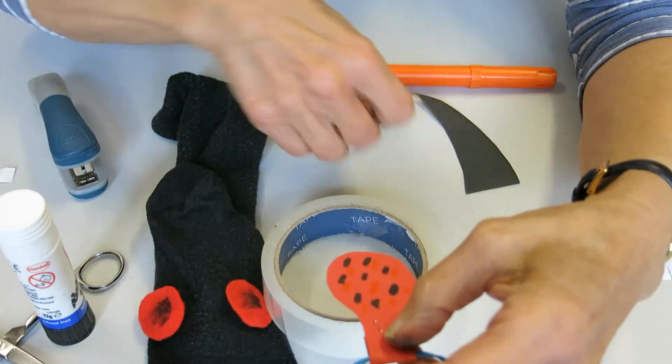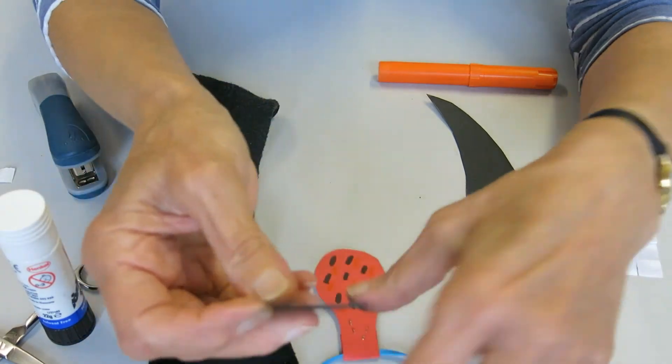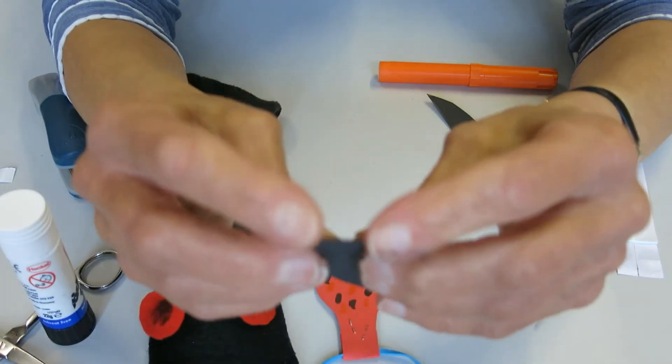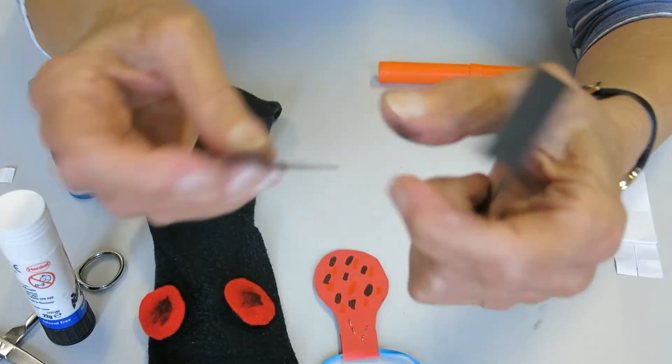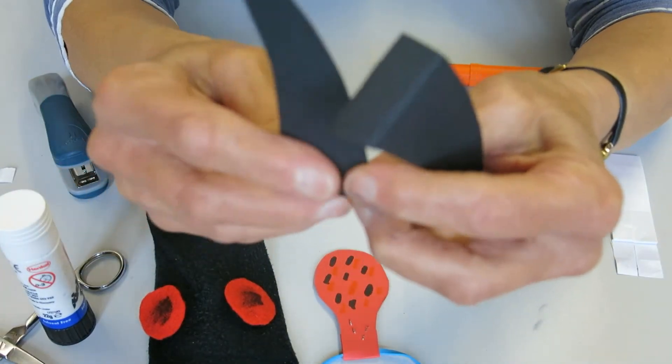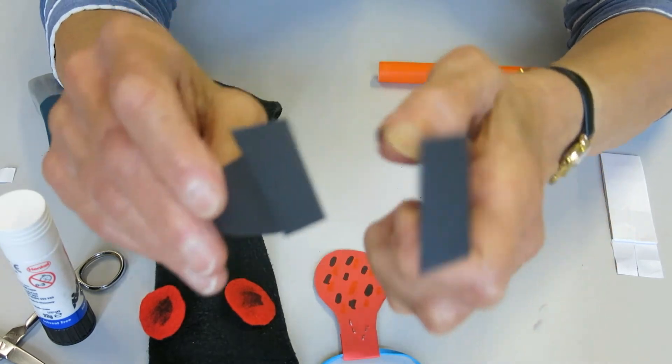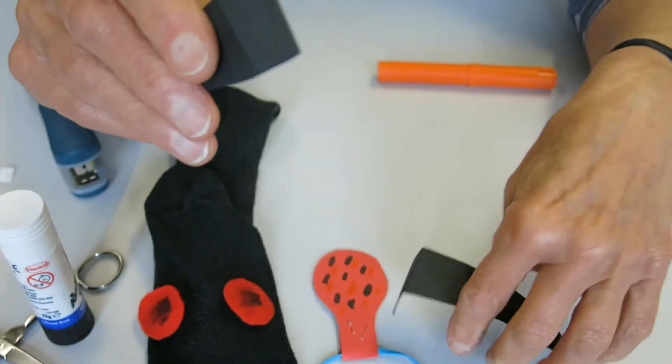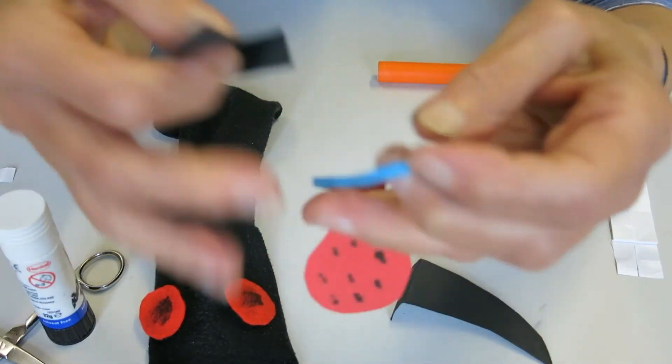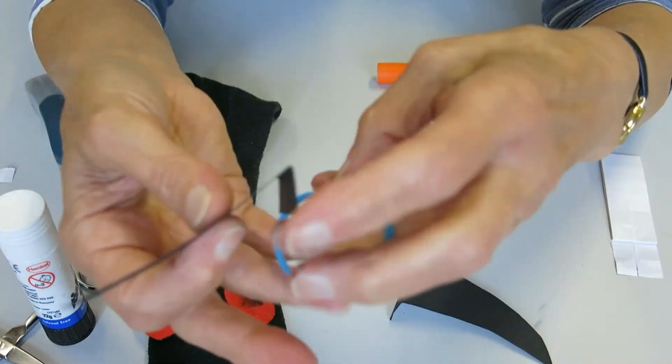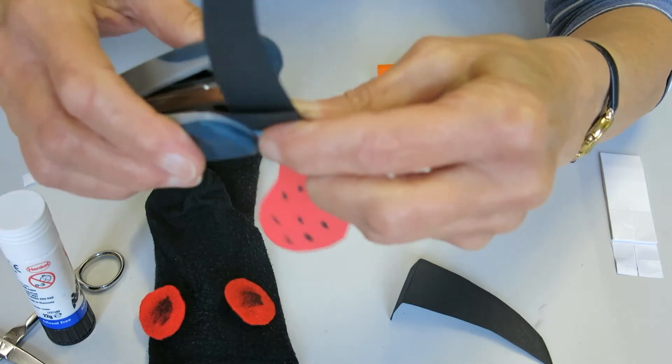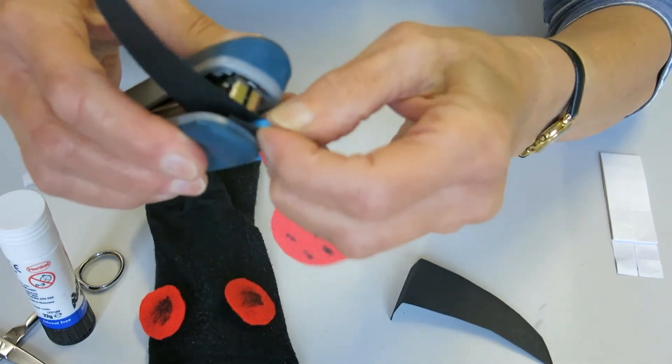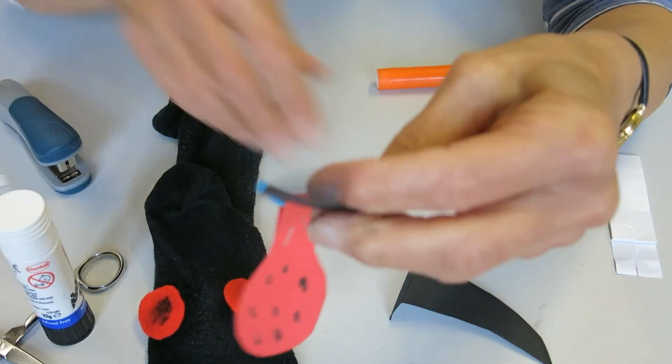Now you need to take his ears and fold them over again so you've got a little fold. Do it on both ears. There we are, two folds and on the opposite side to his tongue you need to clip his two ears.